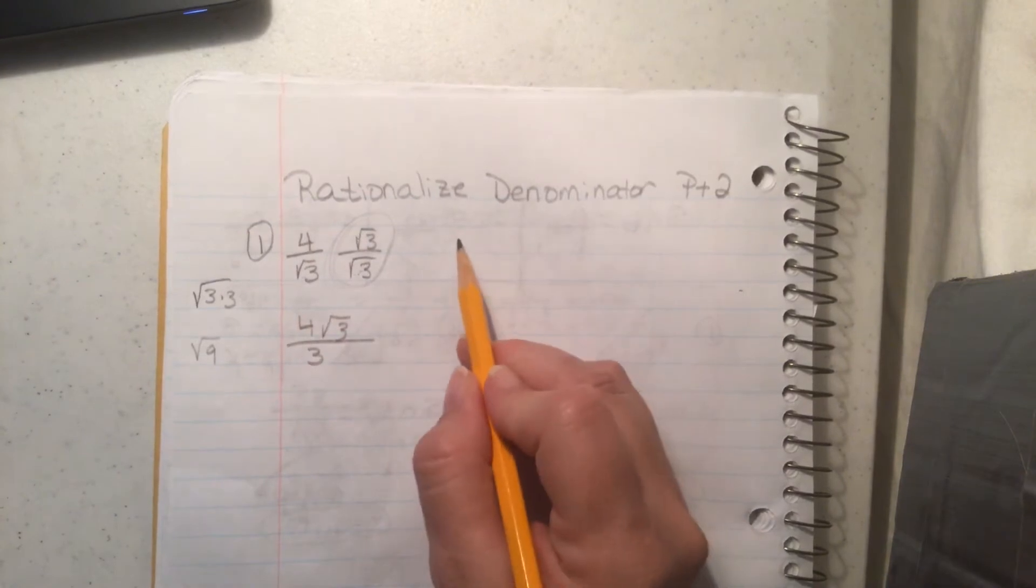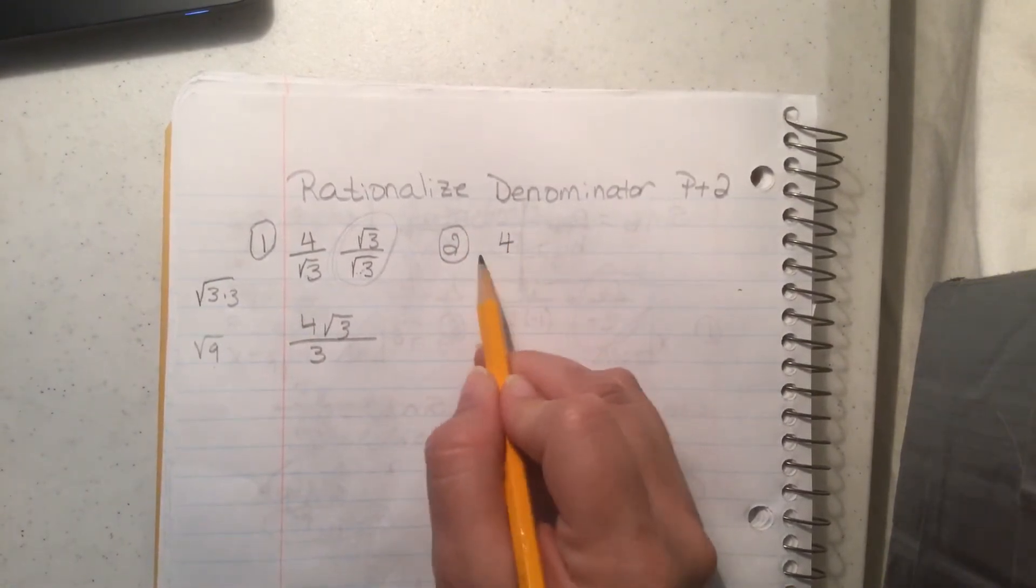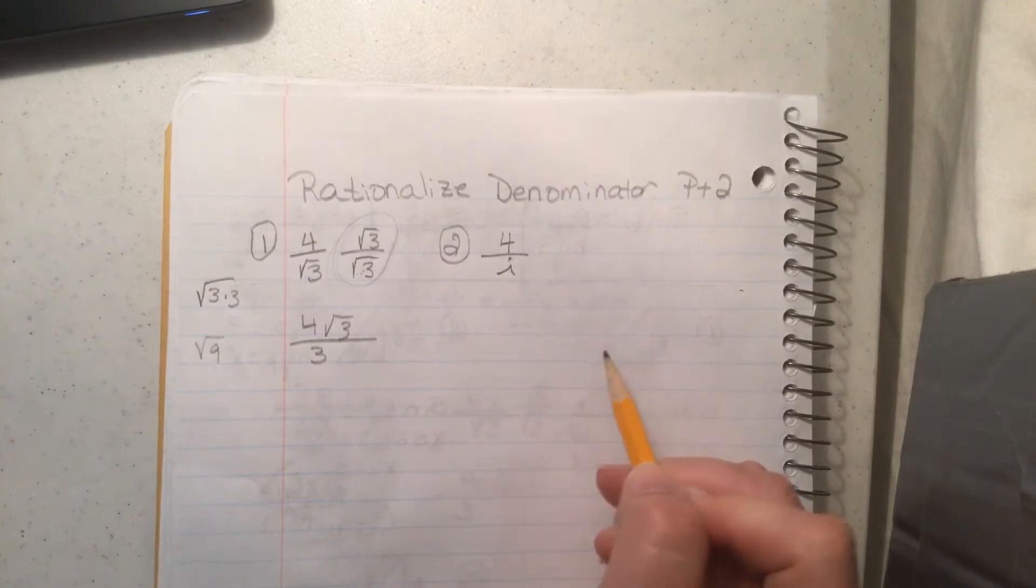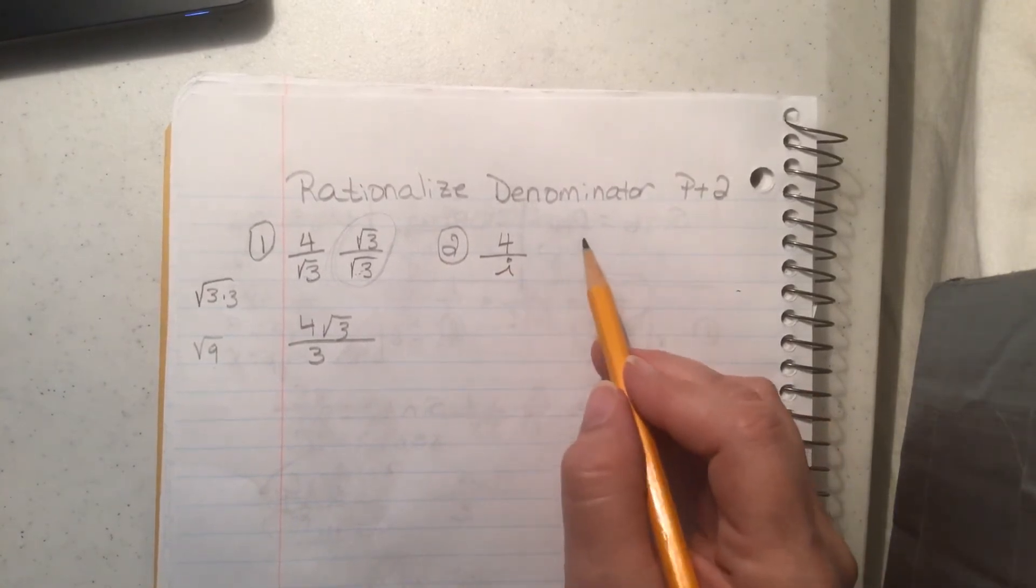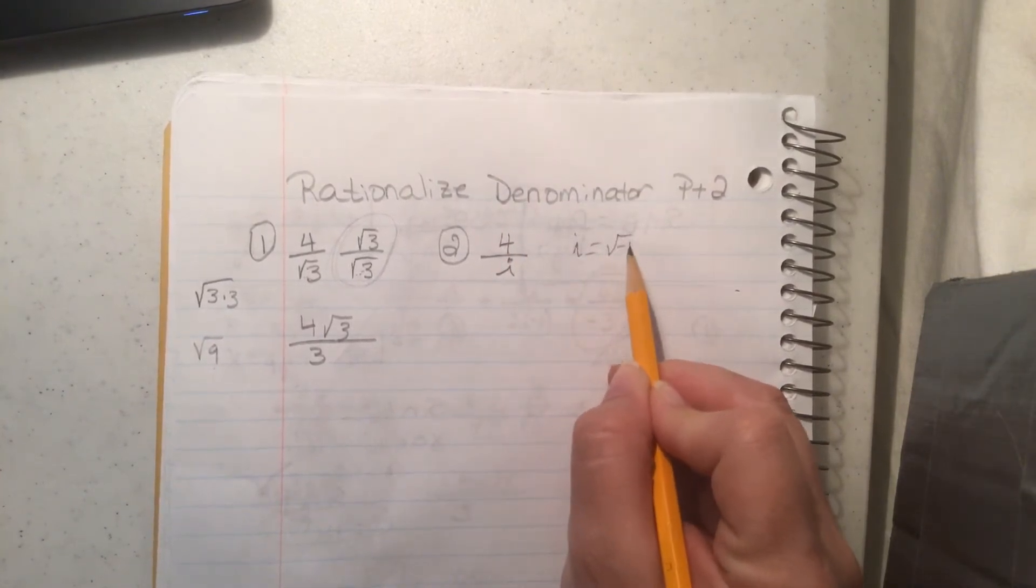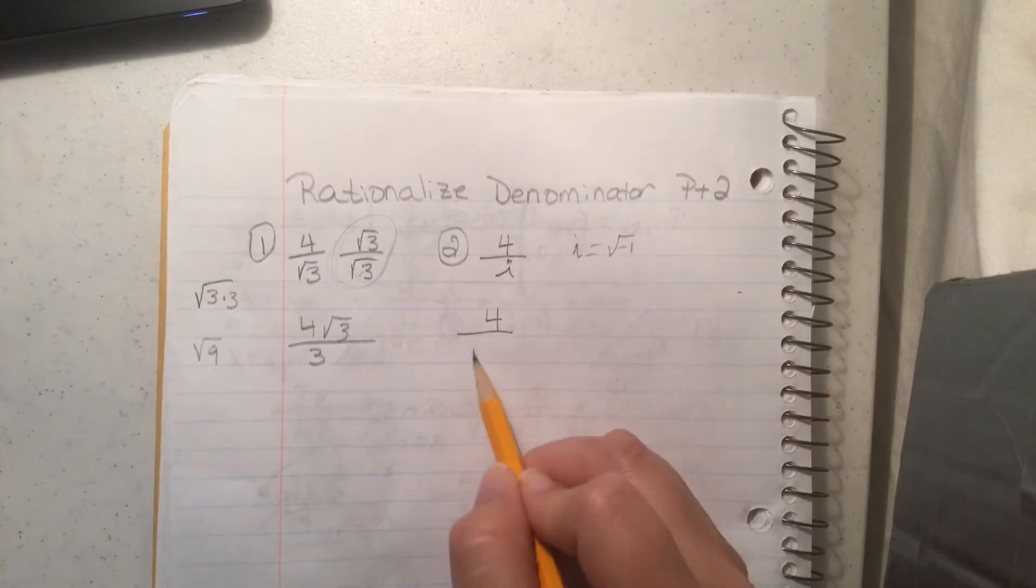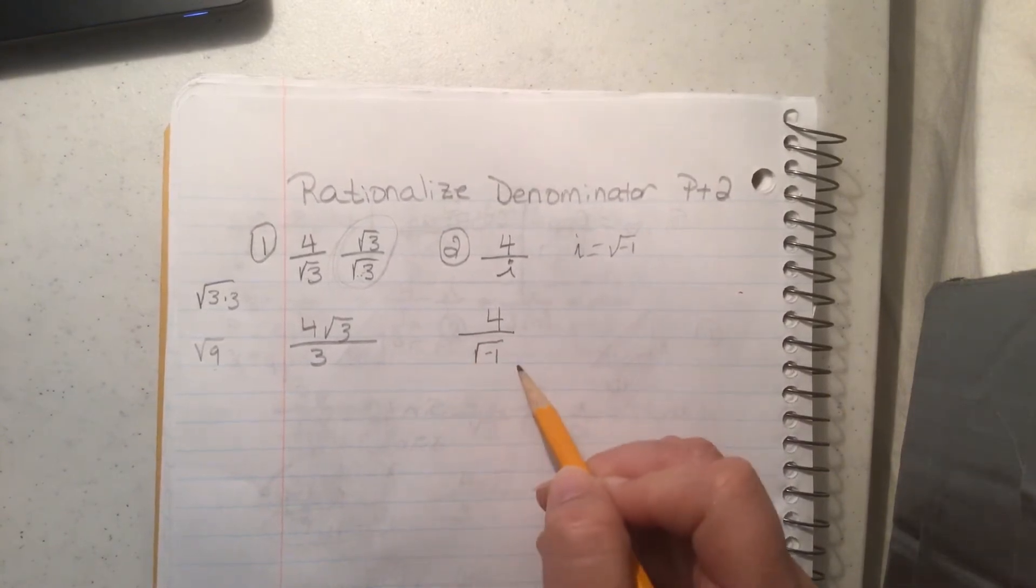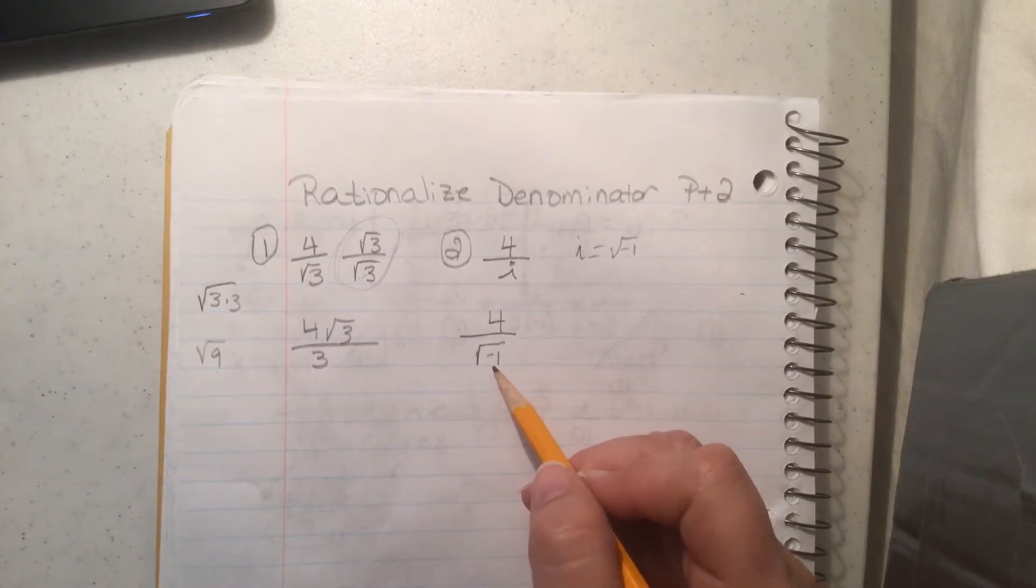Alright, so today what we're going to do is we're going to take that a step further and this time we're going to say it's 4 over i. Well we know that i is really i equals square root of negative 1. So we're really saying 4 over square root of negative 1.